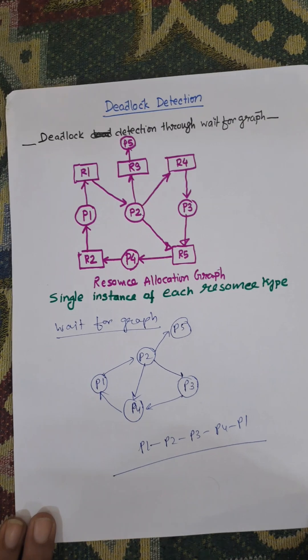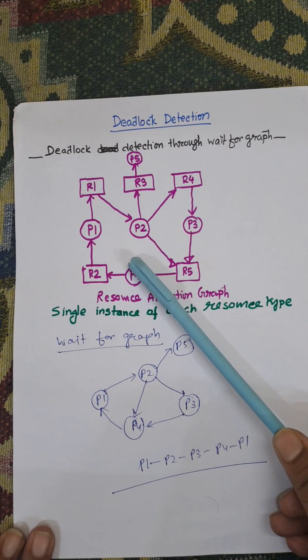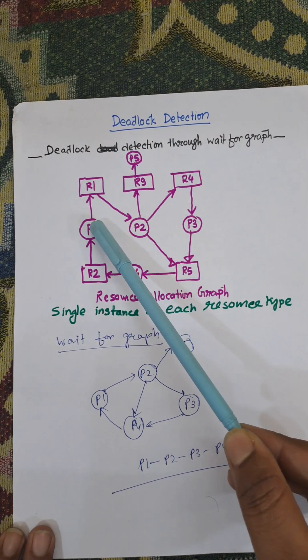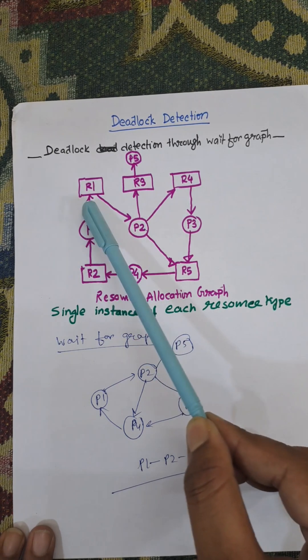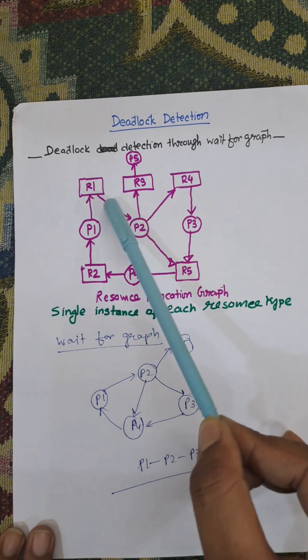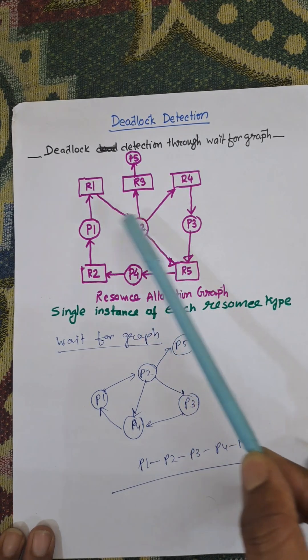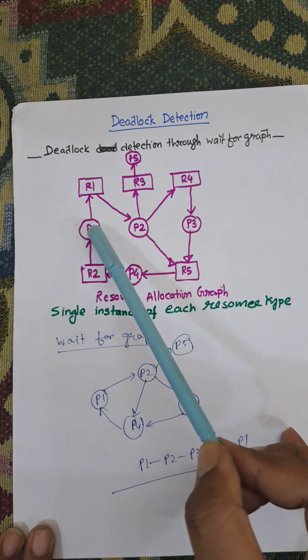So from the resource allocation graph we need to collapse the resources. When you delete R1, then P1 goes to P2.